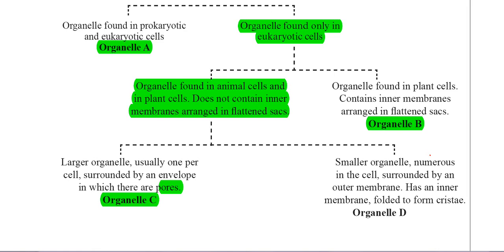If we look at organelle D, it says it's a smaller organelle, many in the cell, surrounded by an outer membrane. There are two organelles really with an outer membrane, three if you class the nucleus actually, but only two organelles that have an outer membrane and an inner membrane folded.